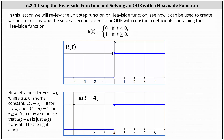In this lesson, we will review the unit step function or Heaviside function, see how it can be used to create various functions, and then solve a second order linear ODE with constant coefficients containing the Heaviside function. Recall the basic Heaviside function or unit step function is defined as u(t) equals zero if t is less than zero, and u(t) equals one if t is greater than or equal to zero.